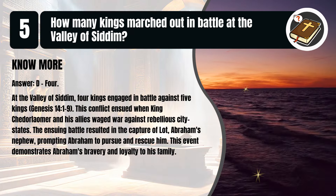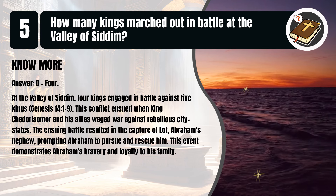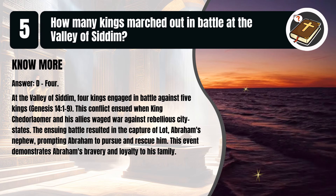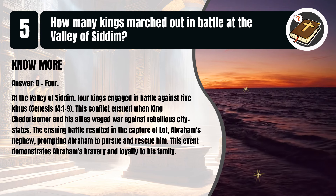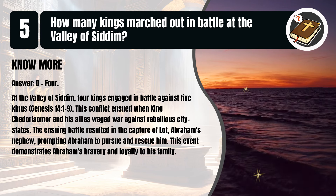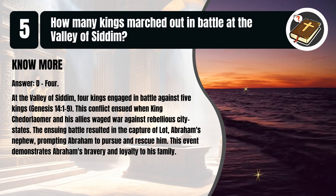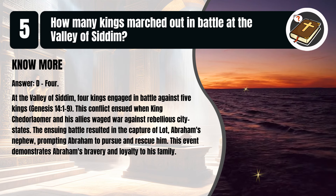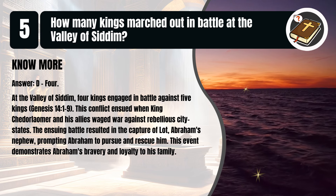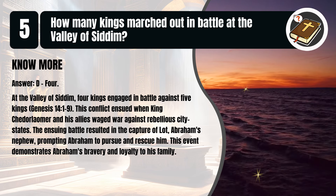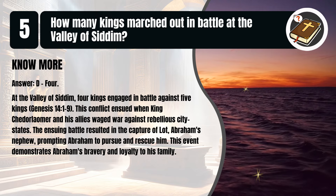That's D. 4. At the Valley of Sedim, four kings engaged in battle against five kings. Genesis, chapter 14, verses 1 to 9. This conflict ensued when King Chedorlamer and his allies waged war against rebellious city-states. The ensuing battle resulted in the capture of Lot, Abraham's nephew, prompting Abraham to pursue and rescue him. This event demonstrates Abraham's bravery and loyalty to his family.